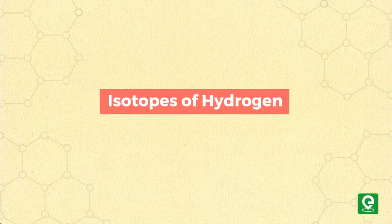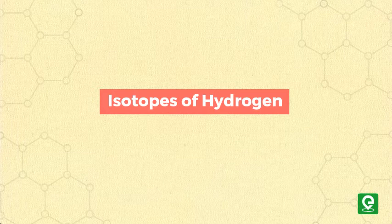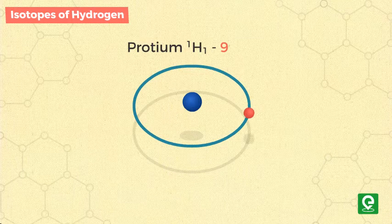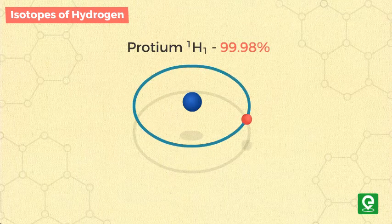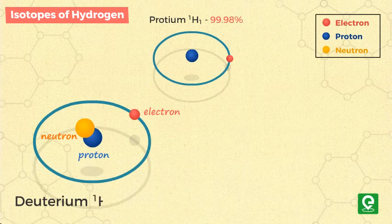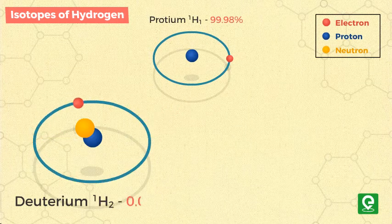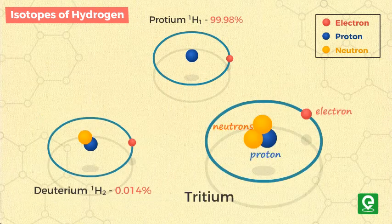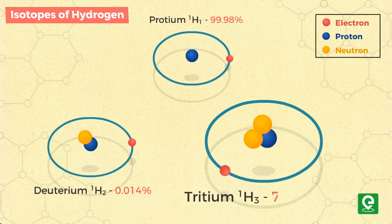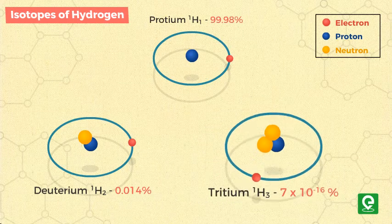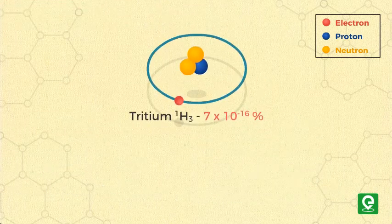Hydrogen naturally exists as three isotopes: protium 1H1, which is 99.98% of total hydrogen present; deuterium 1H2 or D, which is 0.014%; and tritium 1H3 or T, which is 7 x 10^-16%. Tritium is unstable and shows radioactivity.